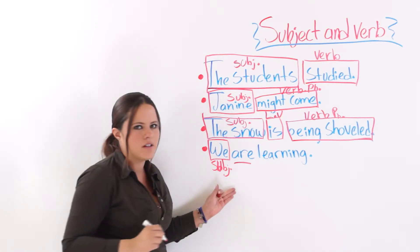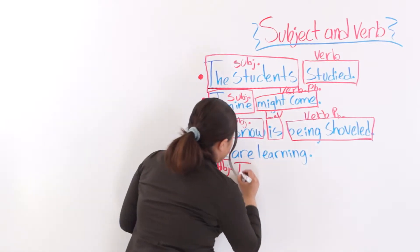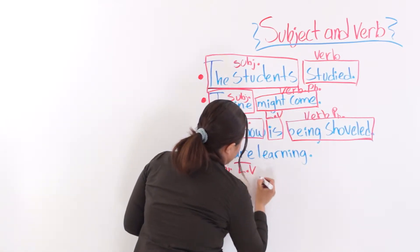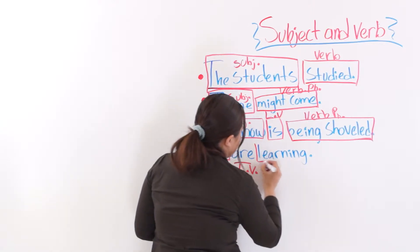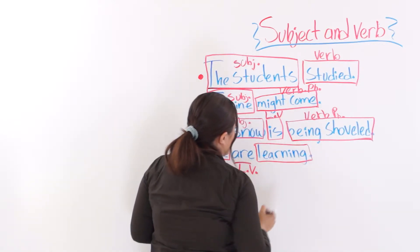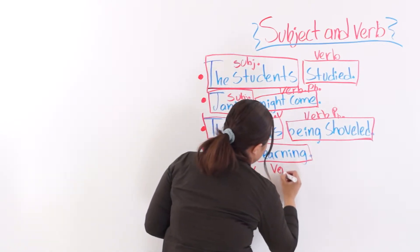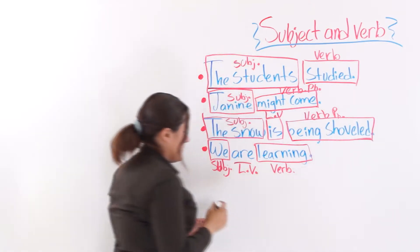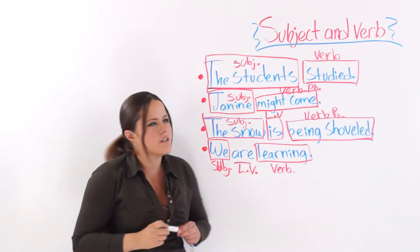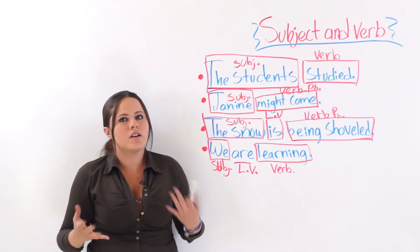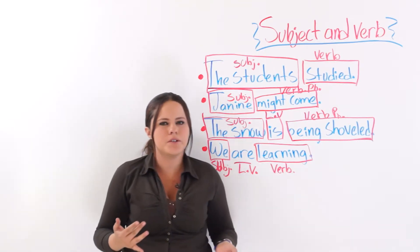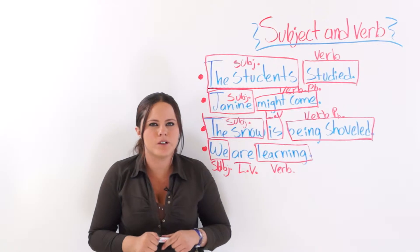Are linking verb. And learning is another verb in gerund form. So, this is how the subject and verb pattern in a sentence works.